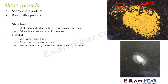Regarding habitat, slime molds are generally seen in soil, lawns, and forest floors. They prefer moist decaying habitats because they feed on dead and decaying matter. They are extremely resistant and can survive under adverse conditions. During unfavorable conditions, they form a cluster of spores. These spores can germinate in new places to form new organisms — that is asexual reproduction.